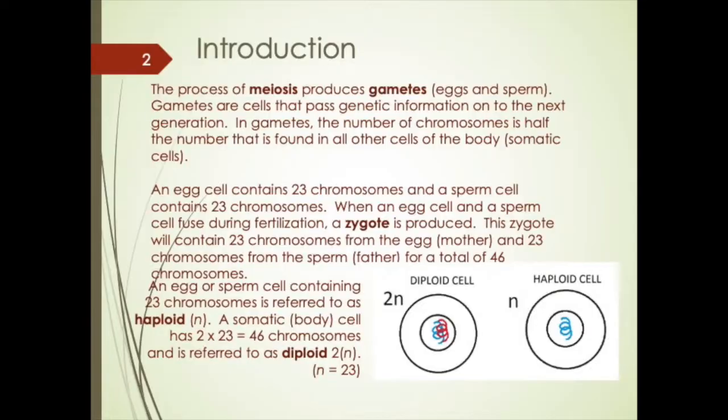So in meiosis, this is the production of gametes — eggs and sperm. Gametes are cells that pass genetic information on to the next generation, the offspring. It produces half the number of chromosomes. So if you have a diploid parent, you're going to produce haploid gametes. Our cells contain 46 chromosomes.